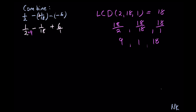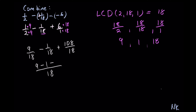2 needs to be multiplied by 9 to get 18. Whatever we do in that denominator, we do the same thing in the numerator. Then we have 1 out of 18, which is already LCD, so we need to do nothing about it. Then we have 6 out of 1, and 1 needs to be multiplied by 18. So now we get 1 times 9 is 9, out of 2 times 9 is 18. Minus 1 out of 18. Plus 6 times 18 is 108, out of 18. Now we can bring everything under common denominator of 18, and we have 9 minus 1 plus 108. 9 minus 1 gives us 8, plus 108, out of 18. 8 plus 108 gives us 116 out of 18.